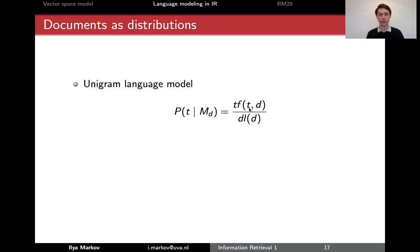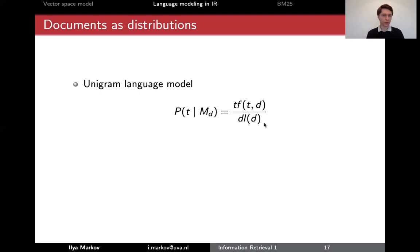That will be the term frequency — the number of times the word 'university' occurs in the page about the University of Amsterdam — divided by the total number of terms in that document. So that's a simple maximum likelihood estimation: the number of times we see a word in a document divided by the length of the document.